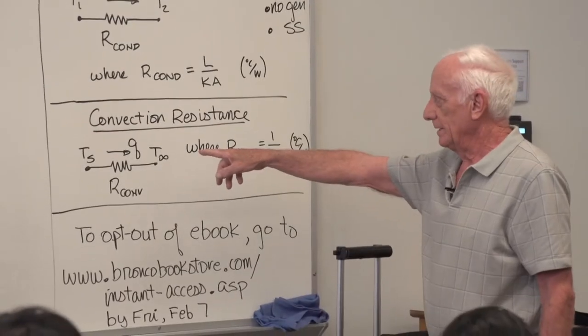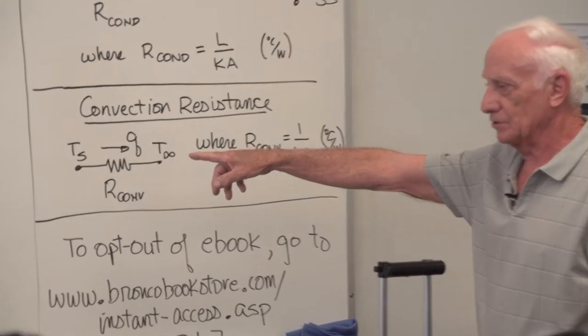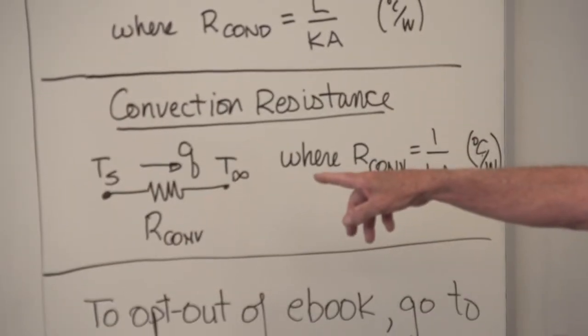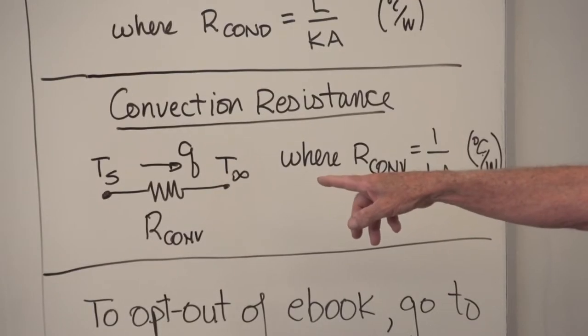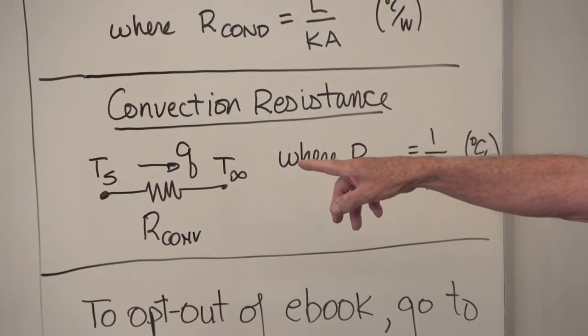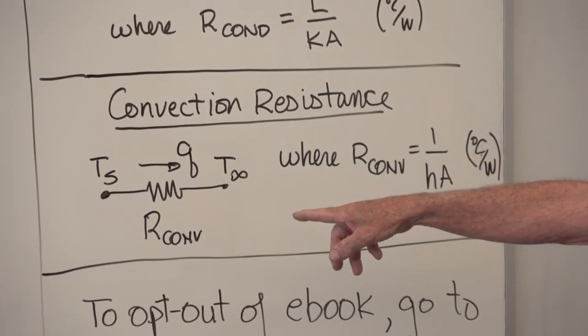Here's the picture for convection: TS is the surface temperature — assume it's hot; T infinity is the free stream fluid temperature — assume it's cooler. Heat flow Q, and there's the resistance R convection.